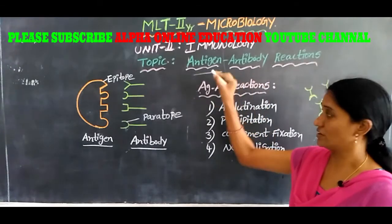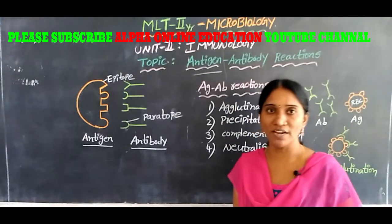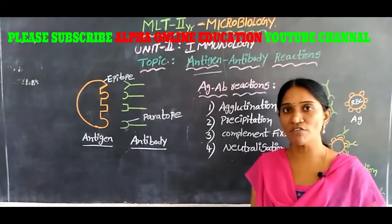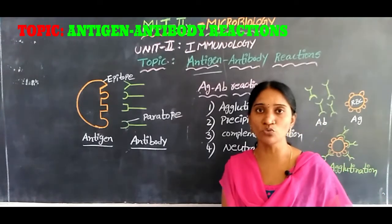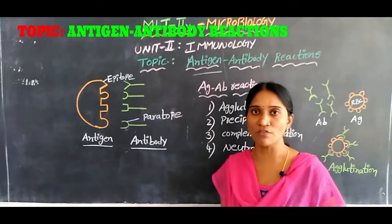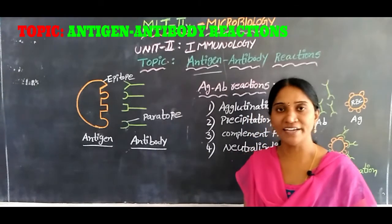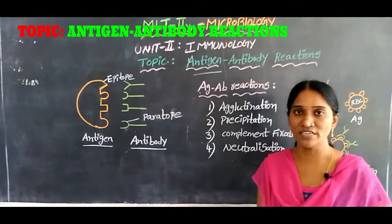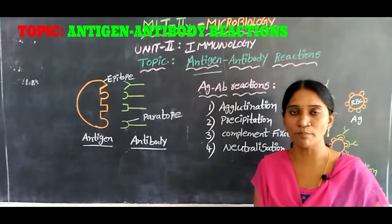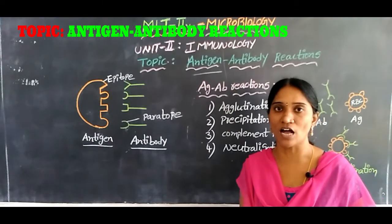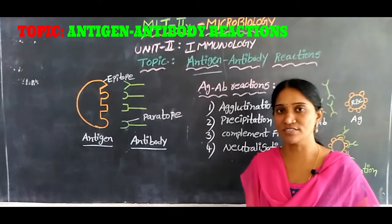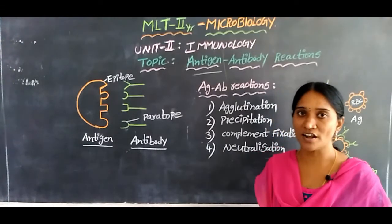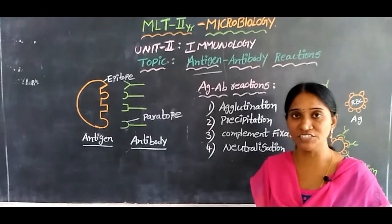Antigen is nothing but a foreign substance. When antigens enter our body, they provoke an immune response for the production of antibodies. Antigens include microorganisms and their substances like proteins, polysaccharides, carbohydrates, toxins, chemicals, and drugs. These all act as antigens.